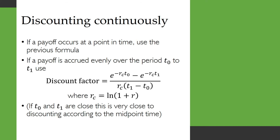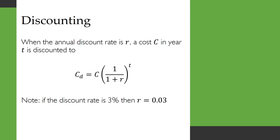If you decide to discount continuously, then if a payoff occurs at a point in time you can use the previous formula. Whereas if the payoff is accrued evenly over a time period from T0 to T1, this is the discount factor you need to use, which involves calculating R subscript C — the continuous discounting rate. If T0 and T1 are close and the discount rate is sufficiently low, this formula will give you almost exactly the same answer as discounting according to the midpoint time. So you can substitute in for T the midpoint of the time span over which you are accruing a payoff at a constant rate.